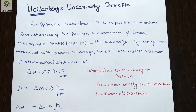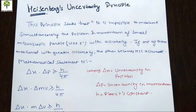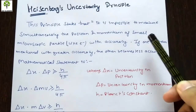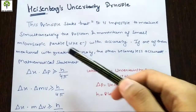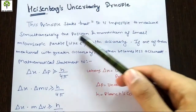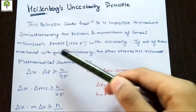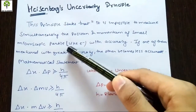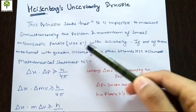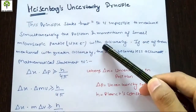In this video, I am going to tell you about Heisenberg's Uncertainty Principle. It simply states that it is impossible to measure simultaneously the position and momentum of small microscopic particles, like an electron, with accuracy.